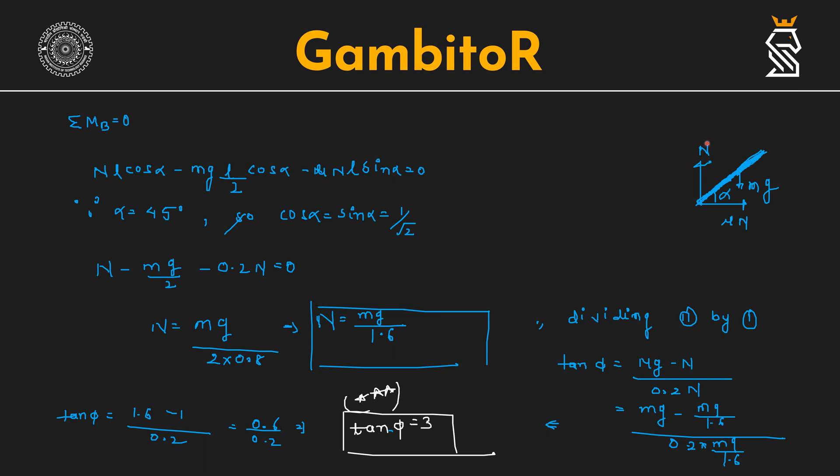Because the torque due to N is in the plane, and torque due to mu N and Mg is out of the plane. We are considering positive torque in the plane.